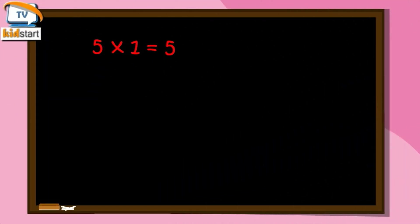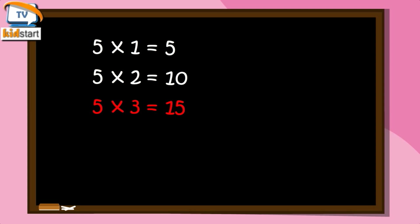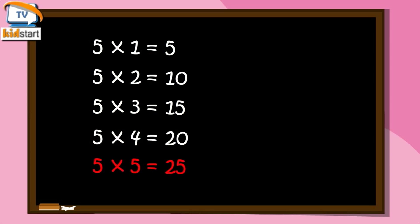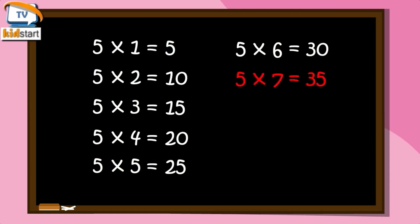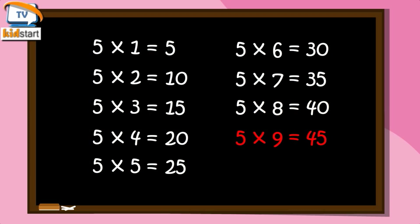5-1s are 5. 5-2s are 10. 5-3s are 15. 5-4s are 20. 5-5s are 25. 5-6s are 30. 5-7s are 35. 5-8s are 40. 5-9s are 45. 5-10s are 50.